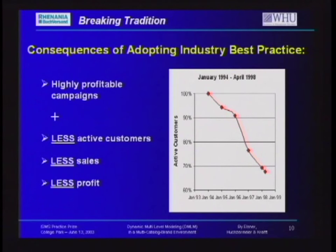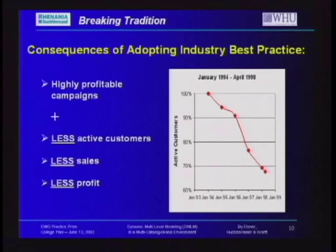In 1994, the boom before and after the German reunification was gone. Concepts good in booming economies failed. This happens very often when the boom is gone. Some US mail order companies — Montgomery Ward, Fingerhardt or Spiegel — made the same experience. At Renanya, we had highly profitable campaigns, but within four years we were losing one third of our active customers — the most important asset of a mail order company. We had less sales and less profit. This is when DMLM came in.